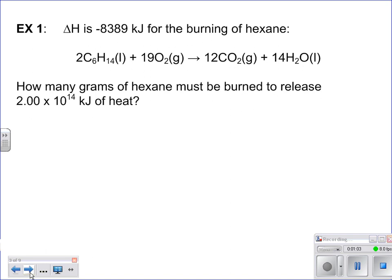If we're given a reaction, and we're told our delta H equals negative so many kilojoules, what that means is since it's negative, that tells me that it's going to be an exothermic reaction, so therefore I put it on the right-hand side. So it becomes plus 8389 kilojoules. All that negative does is tell us which side of the equation it goes on.